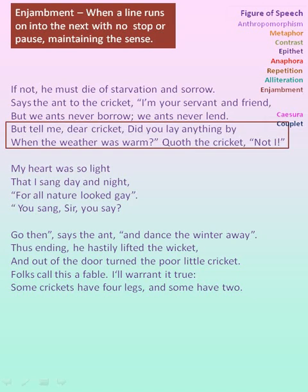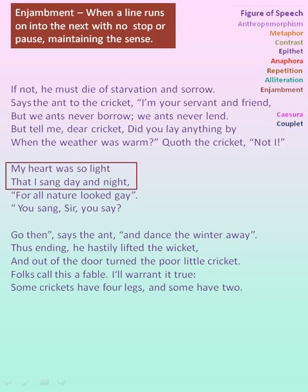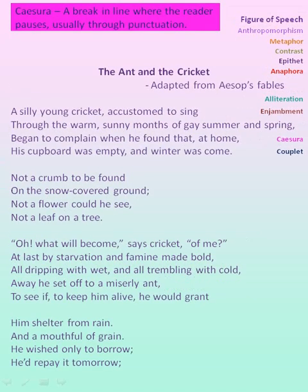In the next stanza, 'but tell me, dear cricket, did you lay anything by' — there is no punctuation after by and the line continues 'when the weather was warm,' hence enjambment. And in the next stanza's first two lines, 'my heart was so light' — there is no punctuation at the end — 'that I sang day and night,' hence enjambment.